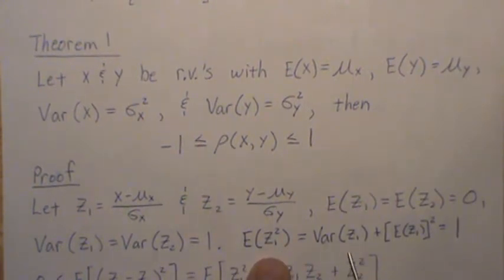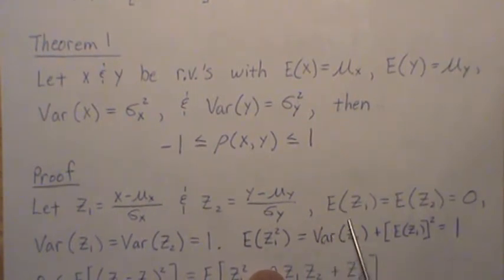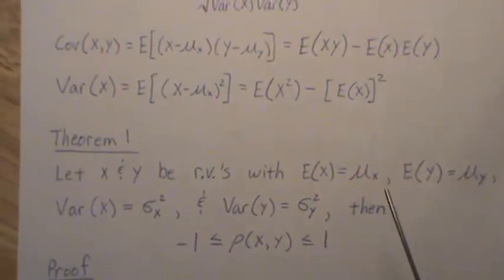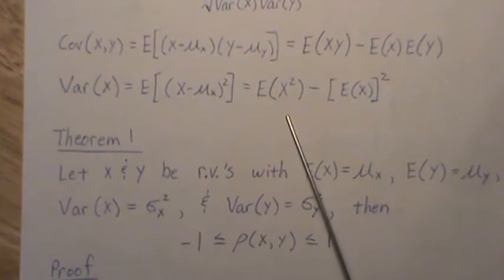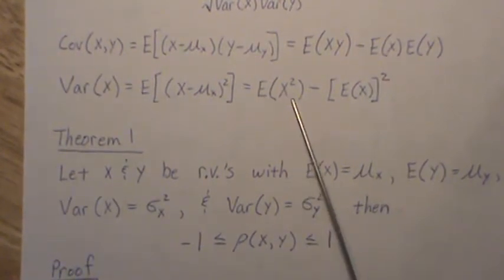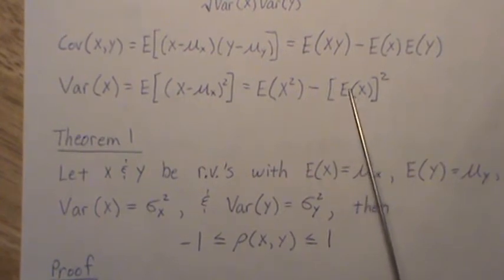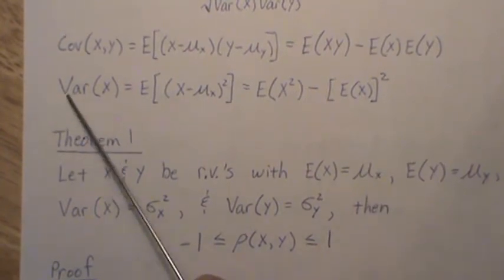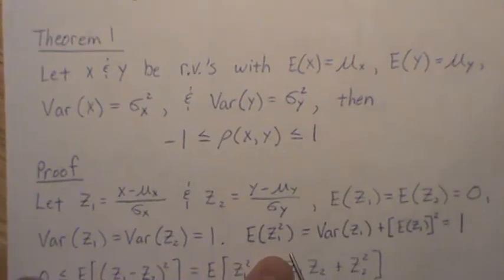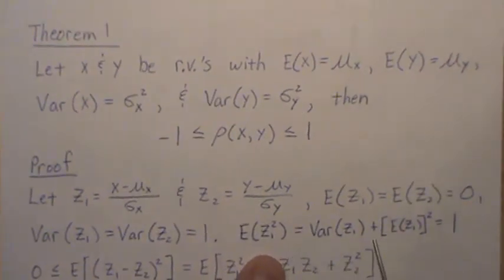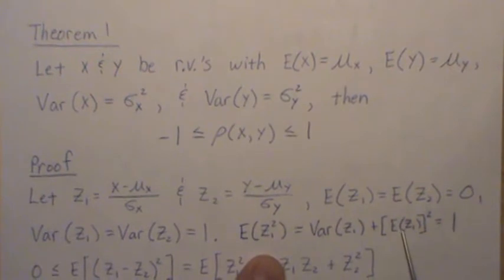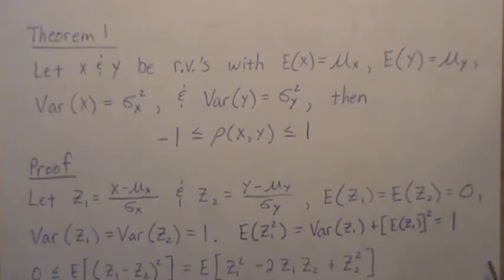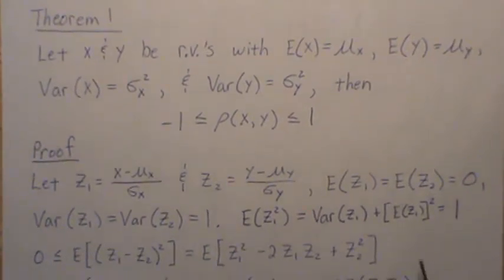E[z1²] equals the variance plus the mean squared. Remember the variance of a random variable is the expected value of x squared minus the mean squared, so if you take that piece to the other side you have a formula for E[x²], and that's what we're doing here. So the variance plus the mean squared — but the mean is 0 and the variance is 1 — so the expected value of z1 squared is 1, and we're going to use that property in the proof.